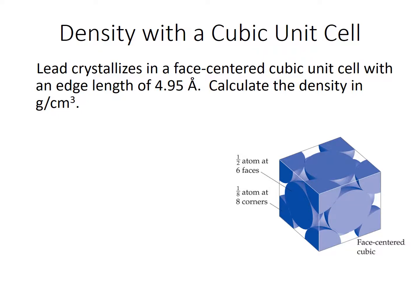All right, welcome. In this video, we're going to be talking about how to calculate density from the information given in a cubic unit cell. This is the problem. Lead crystallizes in a face-centered cubic unit cell with an edge length of 4.95 angstroms. Angstroms is a very, very small unit of distance. Calculate the density in grams per cubic centimeter.